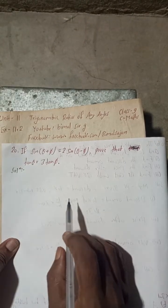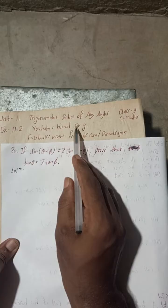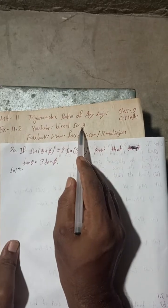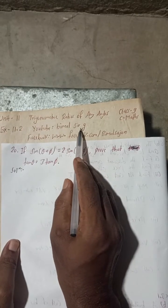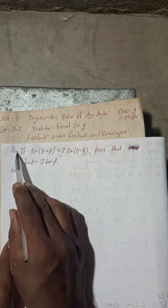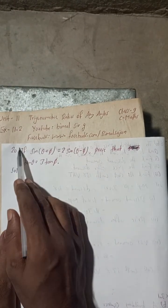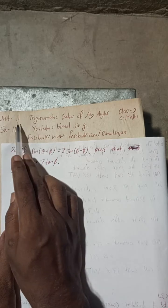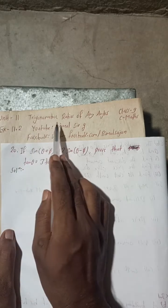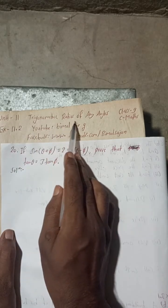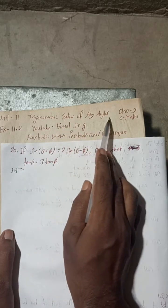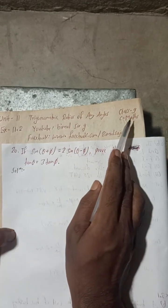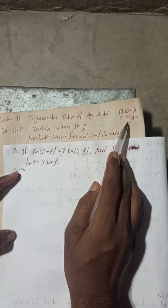Radhe Radhe, Jaya Sri Krishna. Class 9 and 10 students, welcome back to Bhimalsarji YouTube channel. This is question number 20 of exercise 11.2, unit 11, trigonometric ratios of any angles, class 9 compulsory maths.